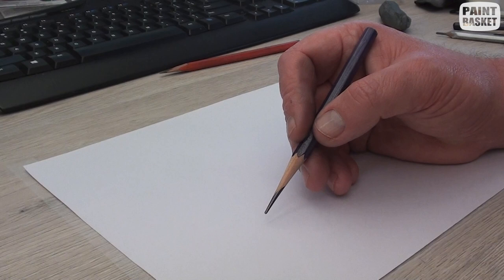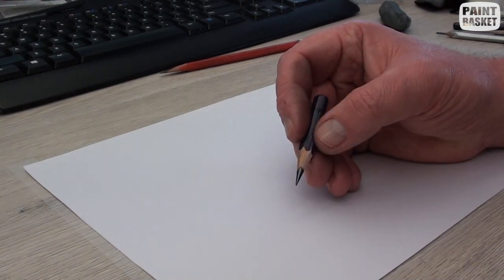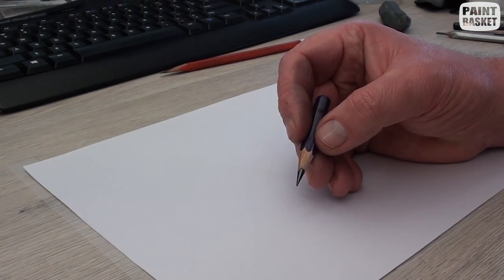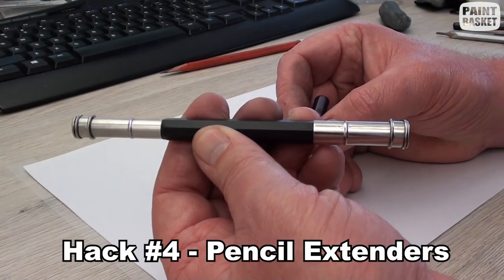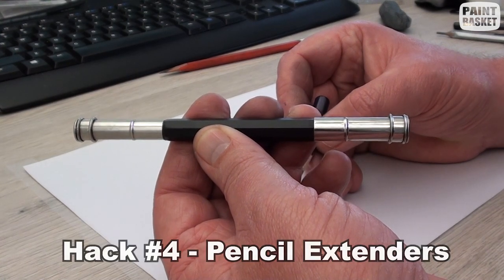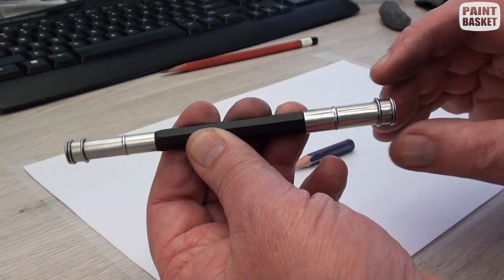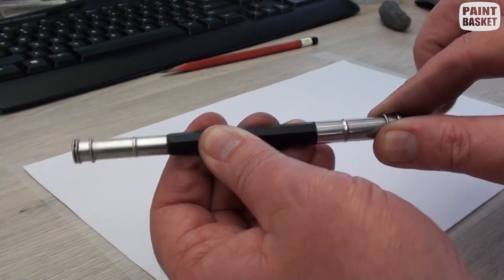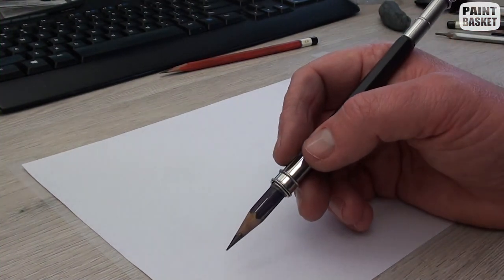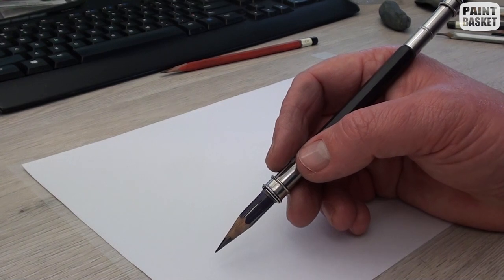As you draw, your pencils gradually become shorter and shorter, up to a point where they're difficult to hold. At this stage, you usually throw the pencil away and buy a new one. By doing this, you're often throwing away up to a third of the useable pencil. What you want to do is get yourself a few of these pencil extenders. You push the lock back, insert your pencil, and then lock the pencil in place. You can now comfortably draw with a short pencil until there is virtually nothing left of it.